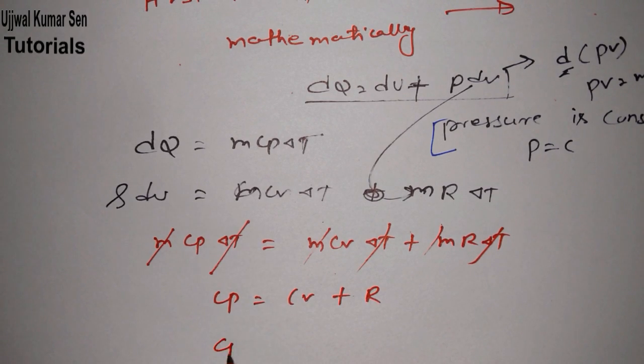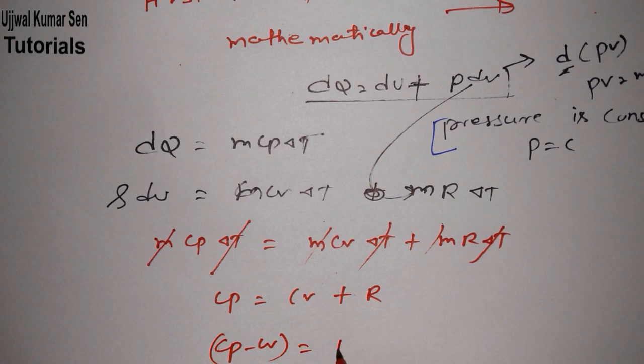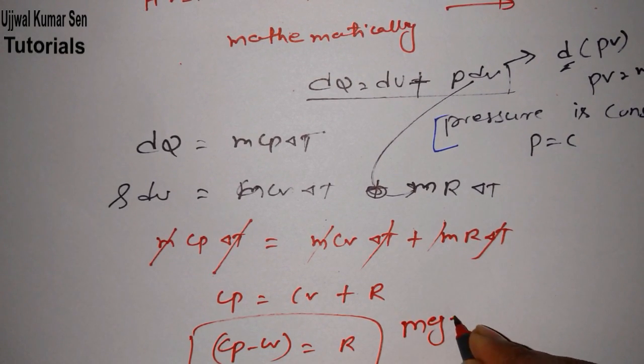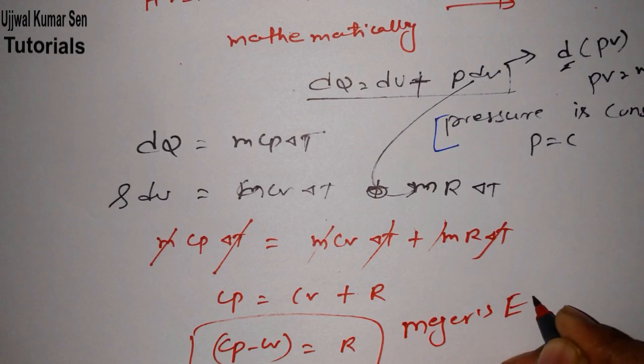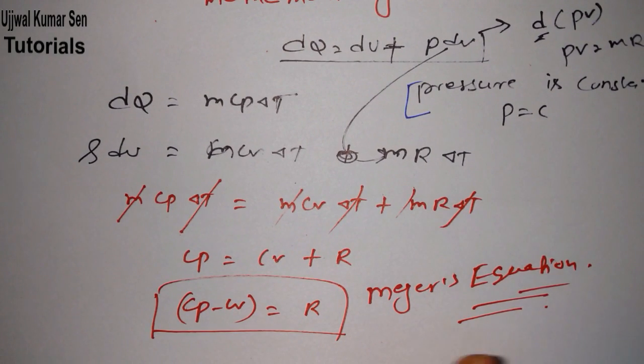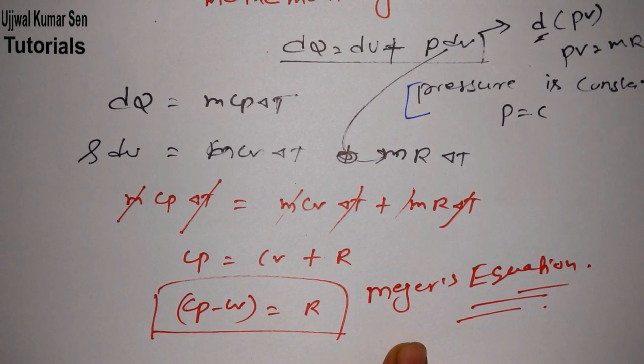So m gets cancelled, delta T gets cancelled. What remains? We have Cp is equal to Cv plus R. Now what we can say? You can transfer this Cv to this side, so what we got? Cp minus Cv is equal to R. So this is also known as Mayer's equation.